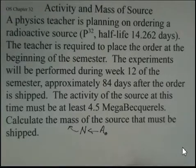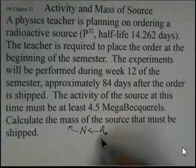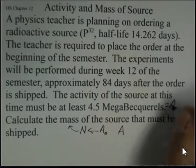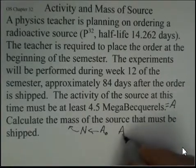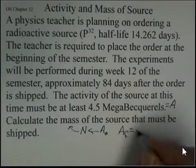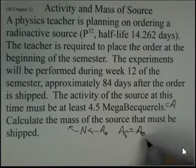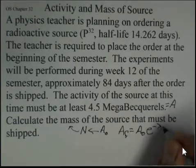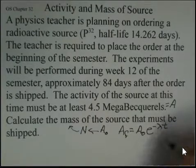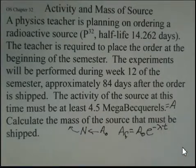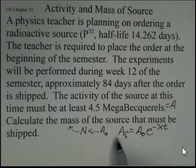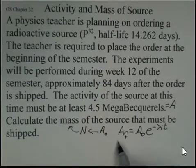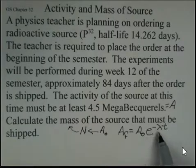Equations that will be important here: to come up with the beginning activity, we are told the final activity. The 4.5 megabecquerels is the final activity, so I could put A sub F there. And our beginning activity is what we're going to need in this step of calculations. And then e to the minus λt. Lambda is the decay constant, and t will be this 84 days. But this is our rule for how the activity decreases exponentially. We have a starting initial activity, we have a final activity, we can compute that with e to the minus λt.